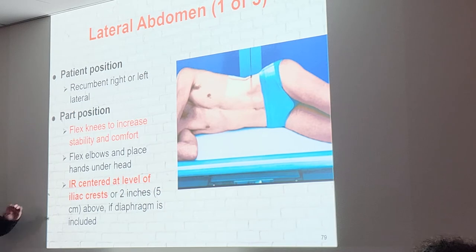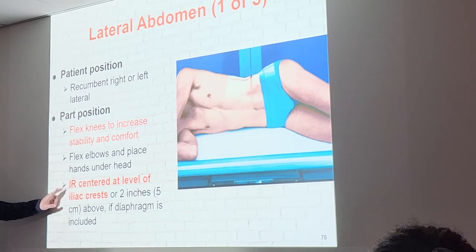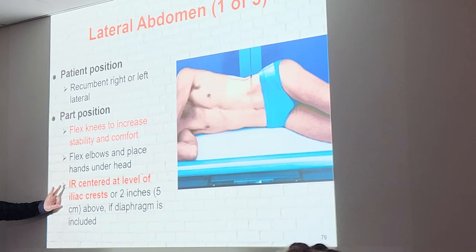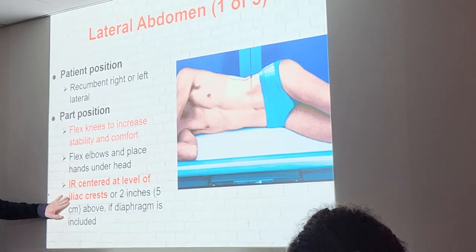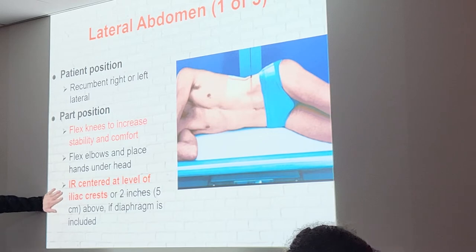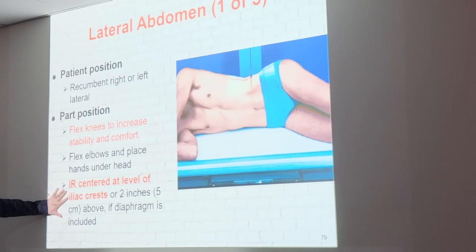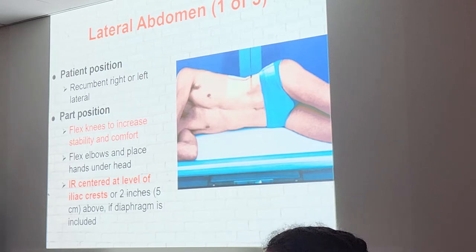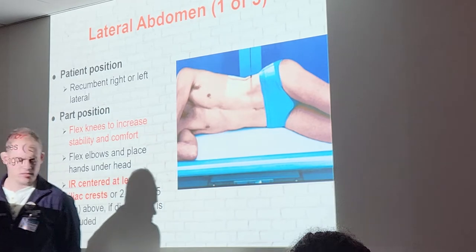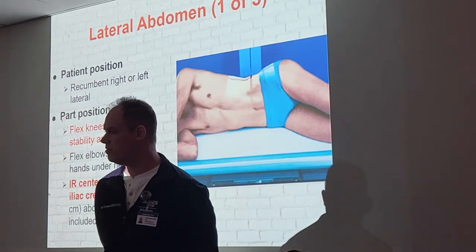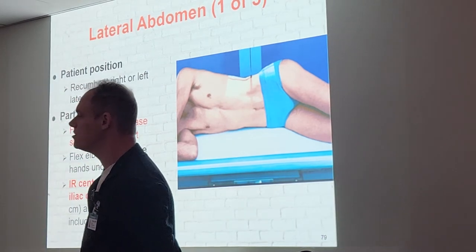We also have a regular lateral abdomen, like a lateral chest but on the table. This one is optimally centered at the level of the crest — so that's two exams centered at the crest: KUB and lateral abdomen. All the other abdominal exams are two inches above the crest. Write this down: the only two exams at the iliac crest are the KUB and the regular lateral abdomen; everything else is two inches above.